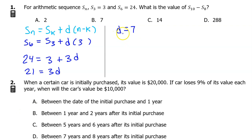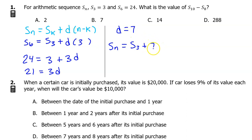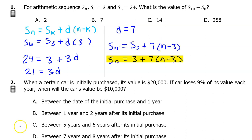Now that we know the common difference, we can write the equation Sn equals Sk, which is S3, plus D, which is 7, times n minus K — in this case n minus 3. Remember that S3 is 3, so now we have an equation for the sequence.